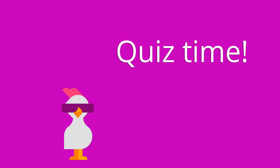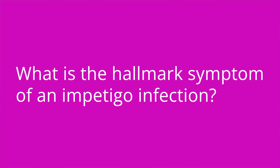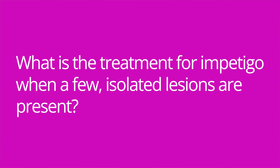It's quiz time, and I've got three questions for you. Question number one: How is impetigo spread? The answer is through direct contact with an infected person or through contact with contaminated items. Question number two: What is the hallmark symptom of an impetigo infection? The answer is yellow or honey-colored crusts that form after vesicles or pustules rupture. Question number three: What is the treatment for impetigo when a few isolated lesions are present? The answer is topical antibiotic ointment.